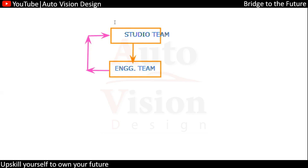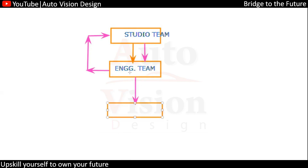Until and unless everything we have been given is exactly right — whatever we are given in magenta color, all the inputs we are receiving into the studio department — at that time we can say this will be directly usable and we can release the part for further process, for manufacturing, without changing anything in the studio surface.